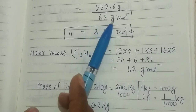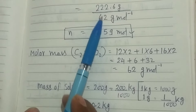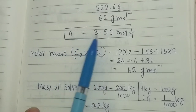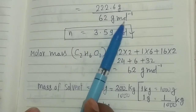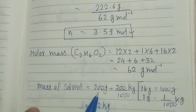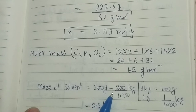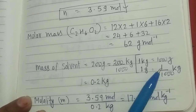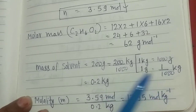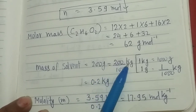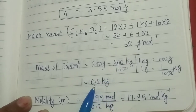Dividing 222.6 grams by 62 grams per mole, the number of moles of ethylene glycol is 3.59 moles. Now, the mass of the solvent is given as 200 grams, and we need to convert it to kilograms. Since 1 kg equals 1000 grams, 200 grams divided by 1000 gives 0.2 kg.